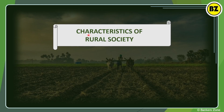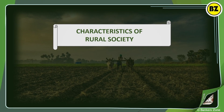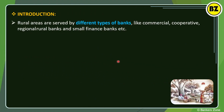Here we'll be discussing the characteristics of rural society. In a rural area, it is served by different types of banks — commercial banks, cooperative banks, regional rural banks (RRBs), and small finance banks. Examples include commercial banks like ICICI and SBI, cooperative banks like Kerala Cooperative Bank, and RRBs.